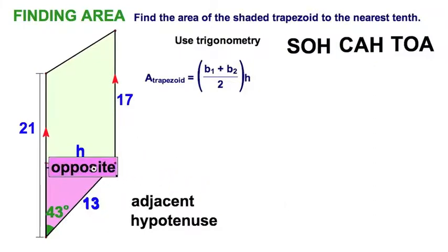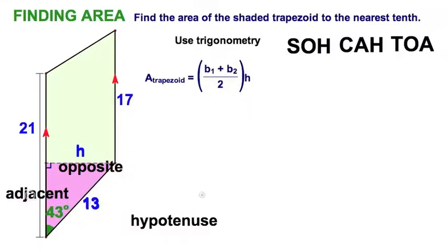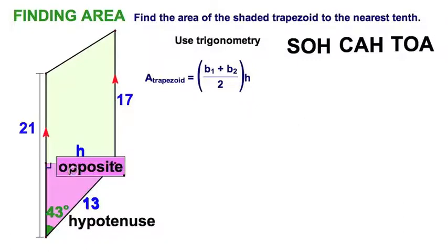We recall our trigonometric identities, our SOHCAHTOA, and, of course, we'll identify. Let me see. The H is opposite of our given angle. Well, the adjacent sides here, and the 13 is the hypotenuse. Well, it's pretty clear. I guess we don't need the adjacent. Opposite hypotenuse, and again, that's going to be a sine function.